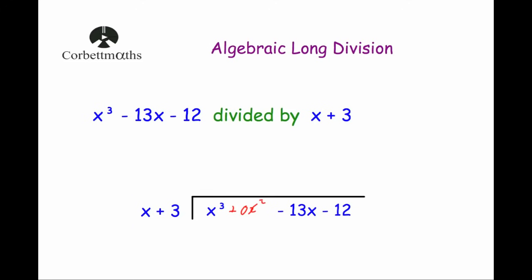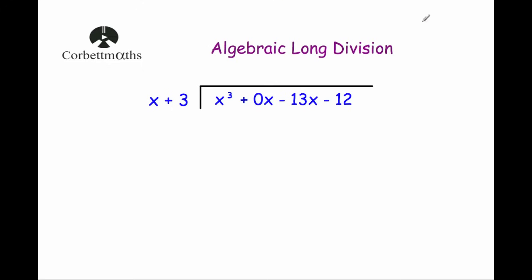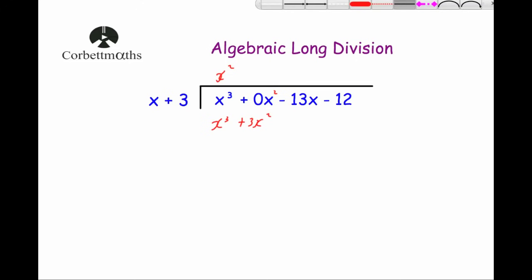Give yourself plenty of room beneath and get started. x cubed divided by x is x squared — write x squared above. Now multiply: x squared times x is x cubed, and x squared times 3 is 3x squared. You can see why I put in that 0x squared — because after multiplication there's a 3x squared term and it's nice to have them in the same column when subtracting.